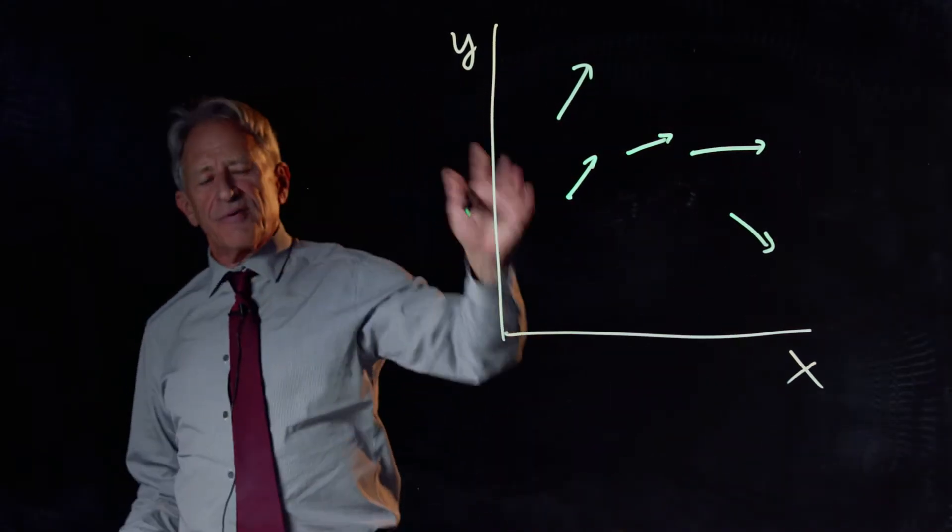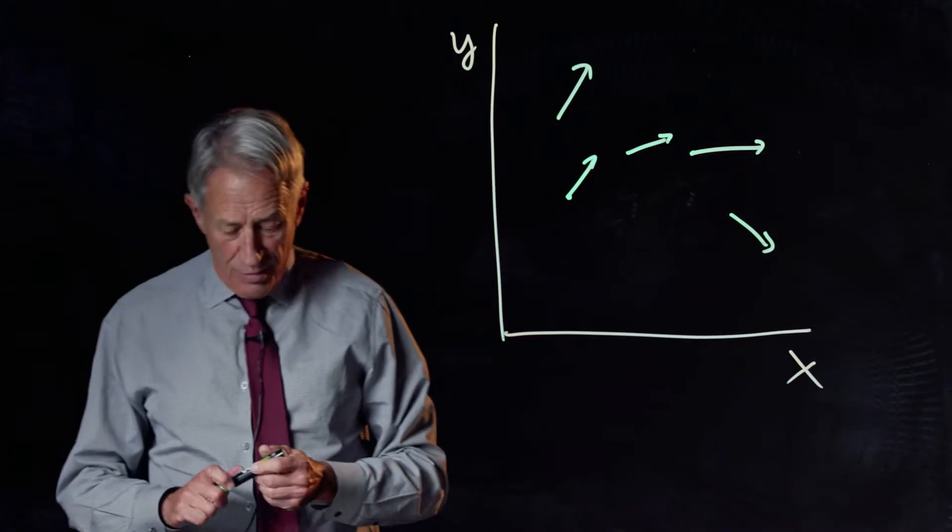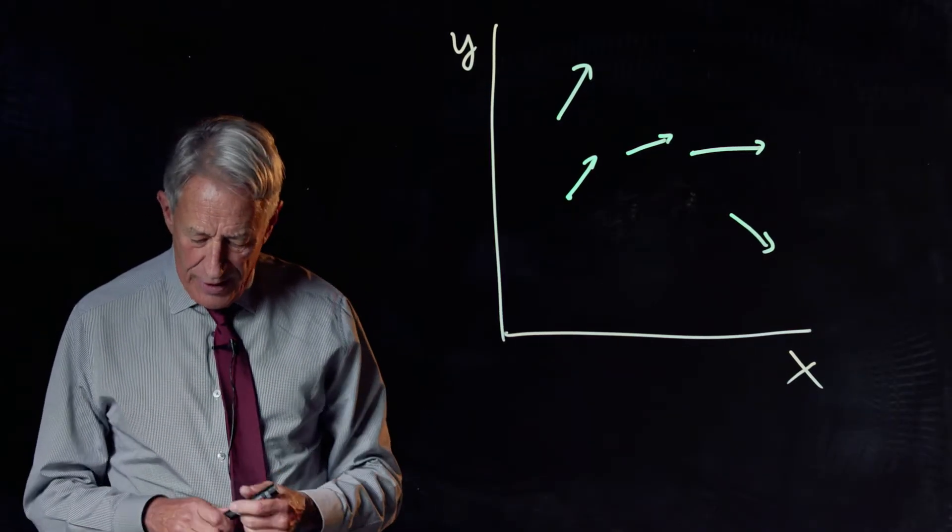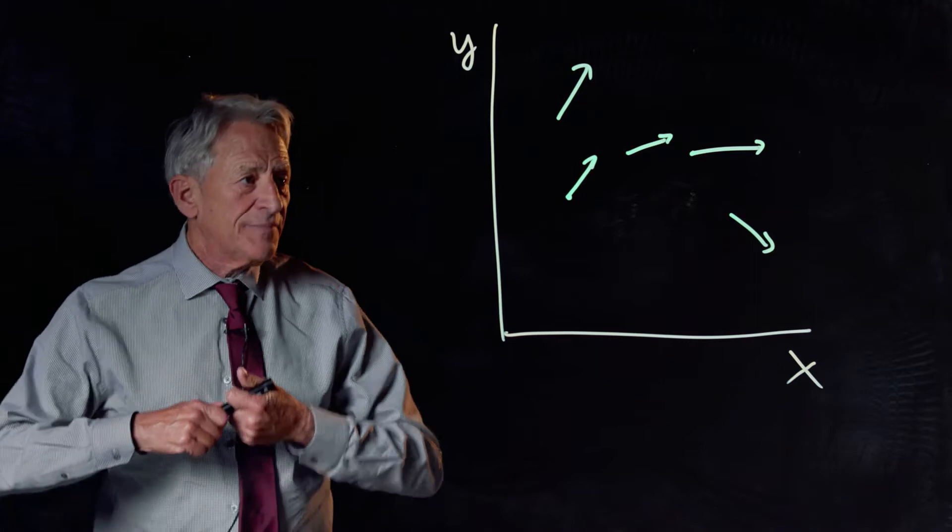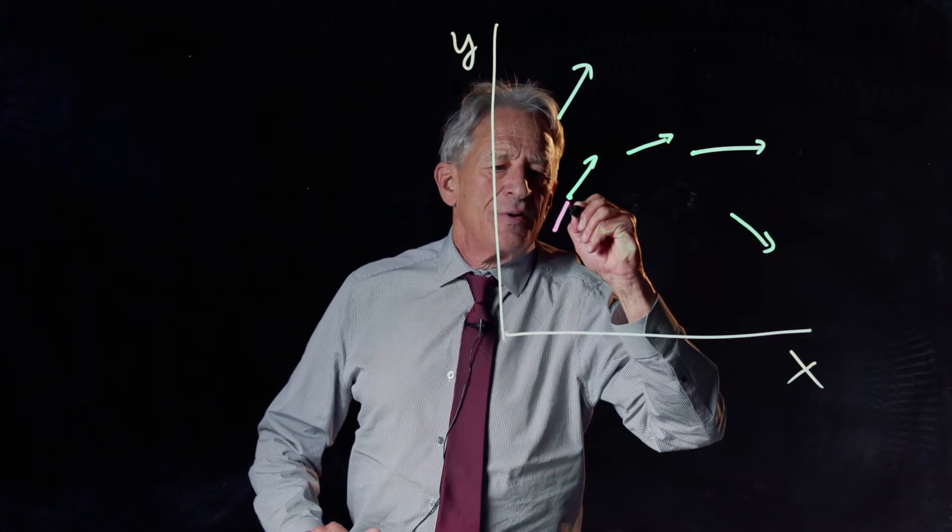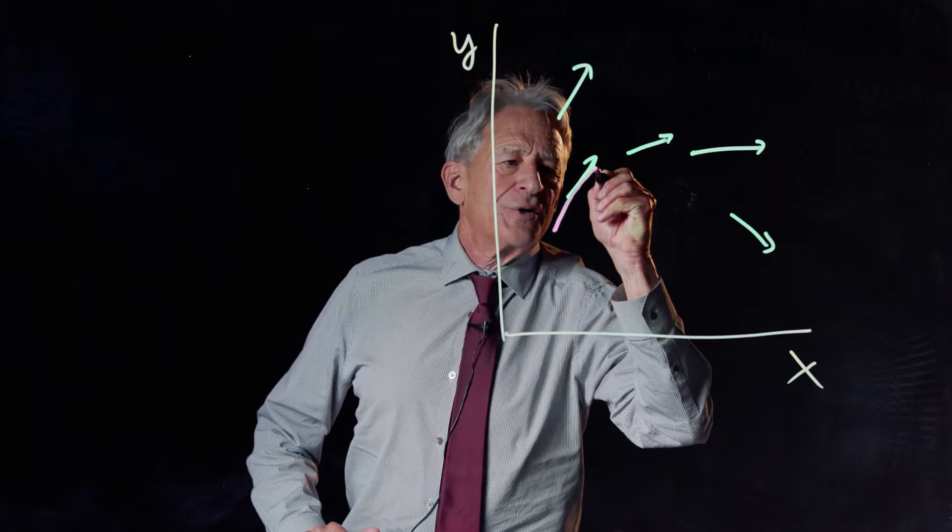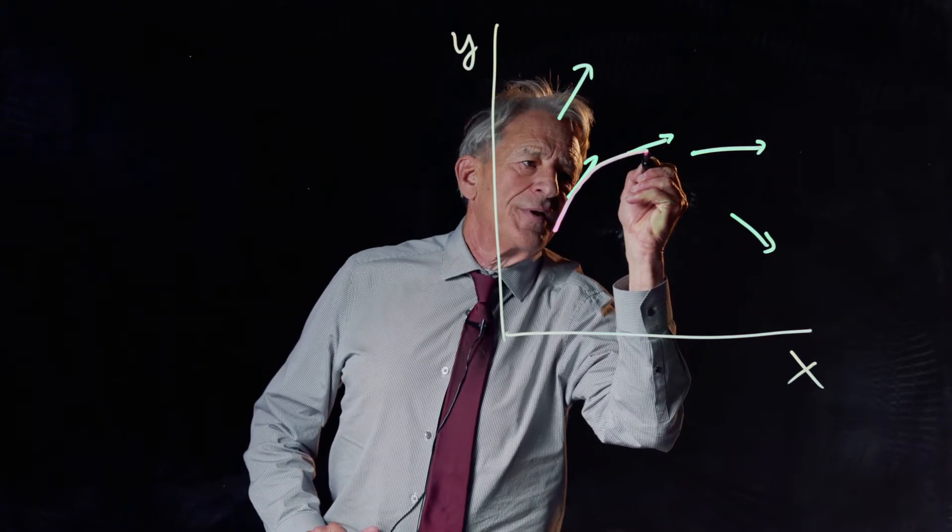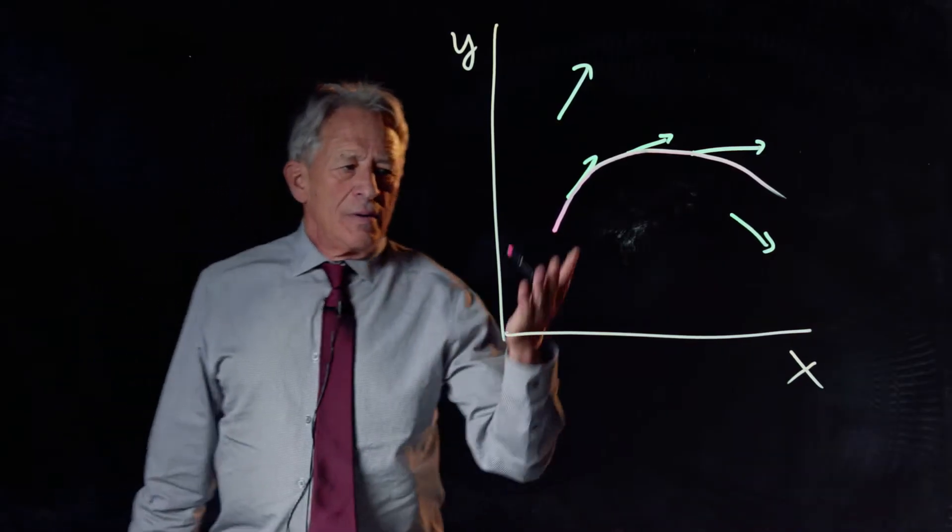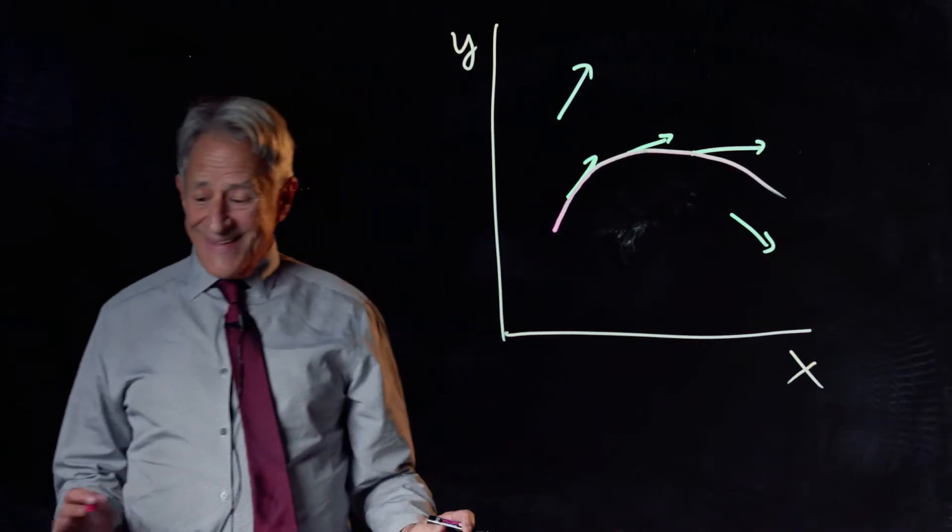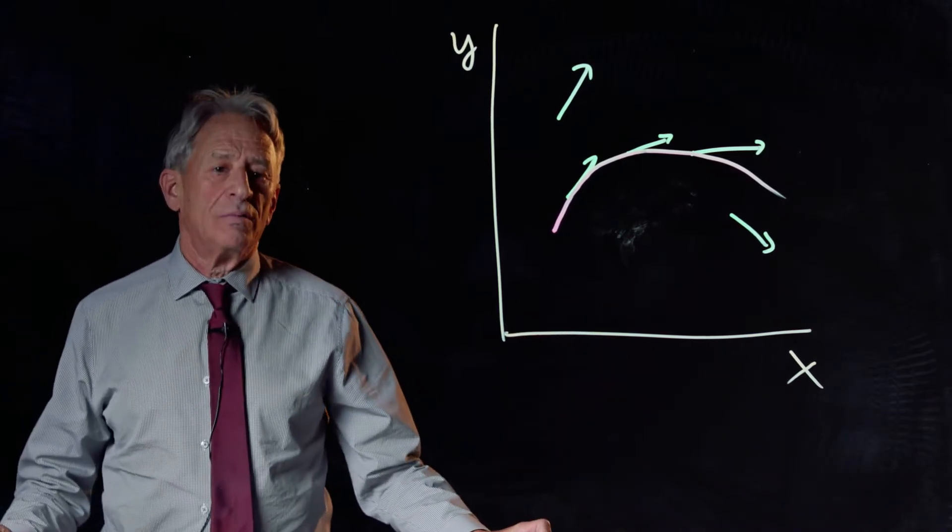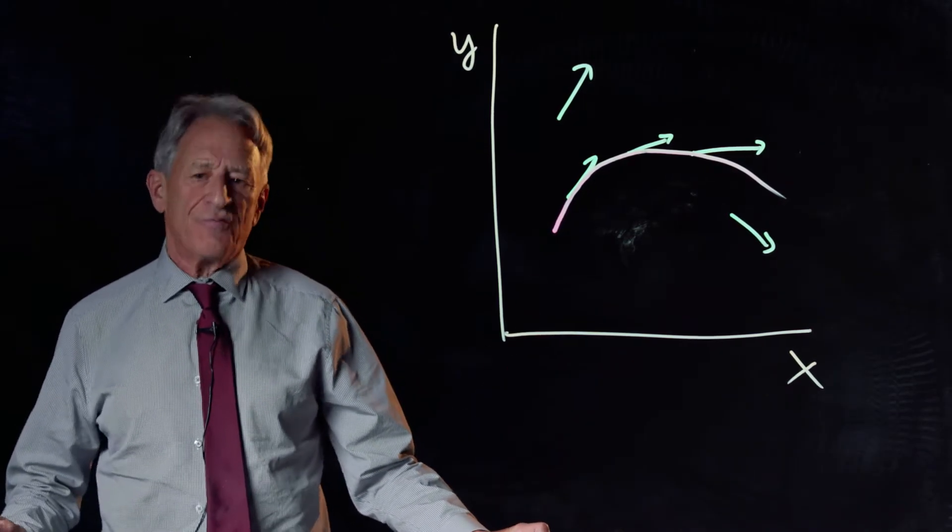But there's a change arrow at every point in state space given by the vector field. We also agreed, because the theorem told us, that there is a unique curve here that is everywhere tangent to the change arrows. As we said, the red curve exists, it is out there, but it is unknowable. We cannot deduce the formula.